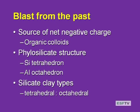We've been talking about the source of the net negative charge. We talked about organic colloids, then we went on to filosilicate structure and talked about the silica tetrahedron and aluminum octahedron. We left off on the silicate clay types, classifying them based on the ratio of tetrahedron to octahedron. We had the Oreo cookie model — it was a little bit of a sugar high so everyone stayed awake. Unfortunately, no sugar high right now.